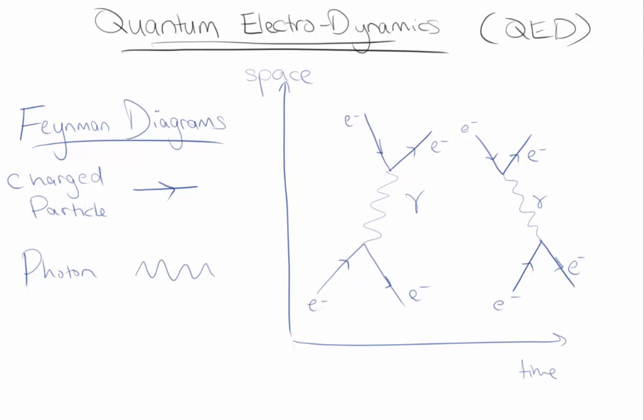In the diagram on the left, the photon is emitted by the bottom electron and absorbed by the top, and in the diagram on the right, the photon is emitted by the top and absorbed by the bottom electron. These are referred to as two different time orderings of the same process.